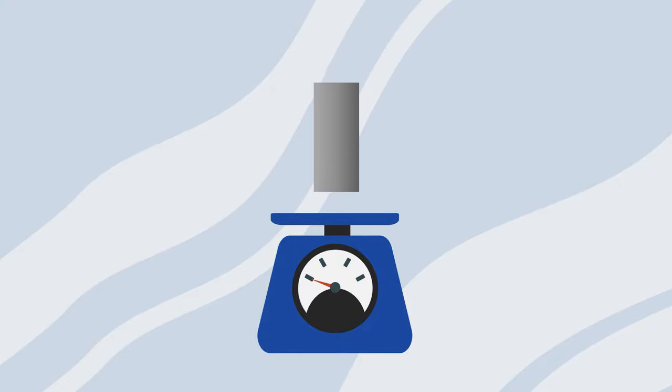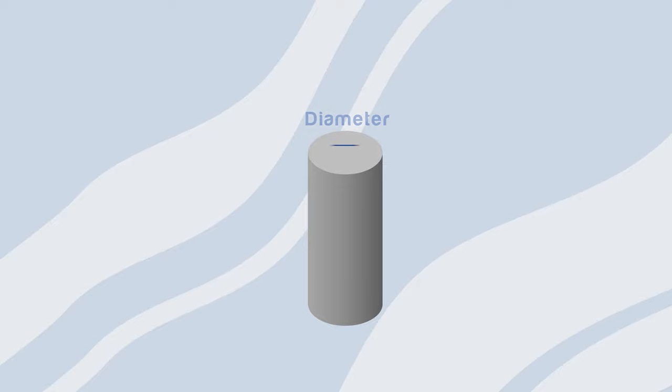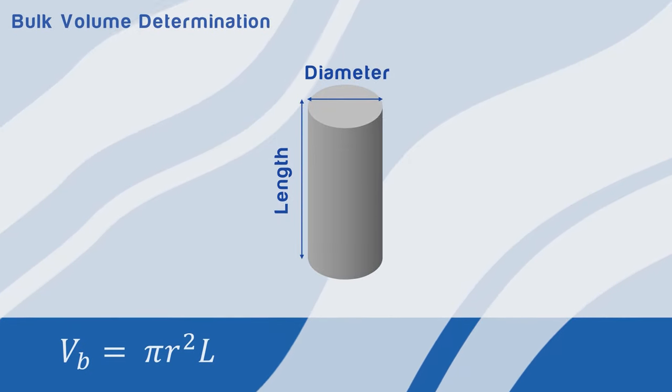In this method we weigh a dry core and measure the dimensions, specifically the diameter and length of the core to obtain the bulk volume.